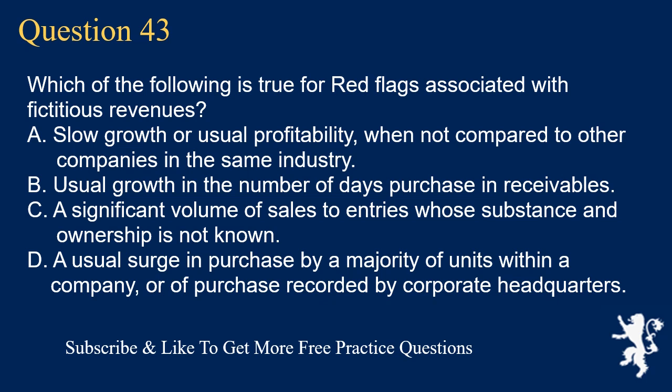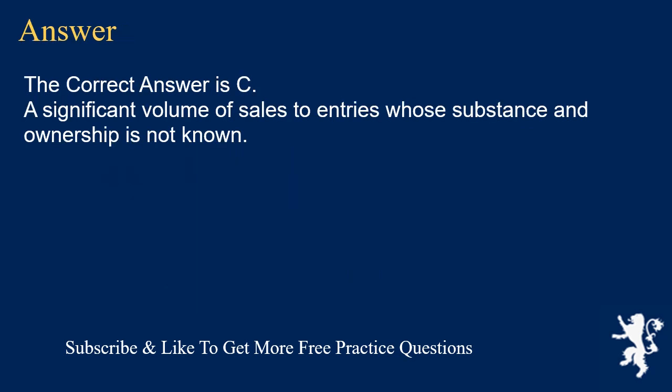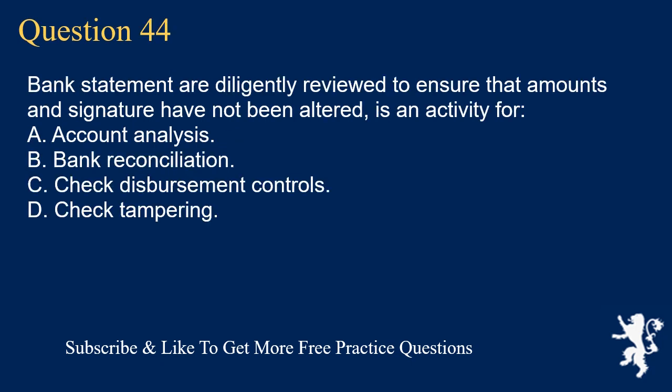Question 43: Which of the following is true for red flags associated with fictitious revenues? A. Slow growth or unusual profitability, when not compared to other companies in the same industry. B. Unusual growth in the number of days purchase and receivables. C. A significant volume of sales to entities whose substance and ownership is not known. D. An unusual surge in purchases by a majority of units within a company, or purchases recorded by corporate headquarters. The correct answer is C.